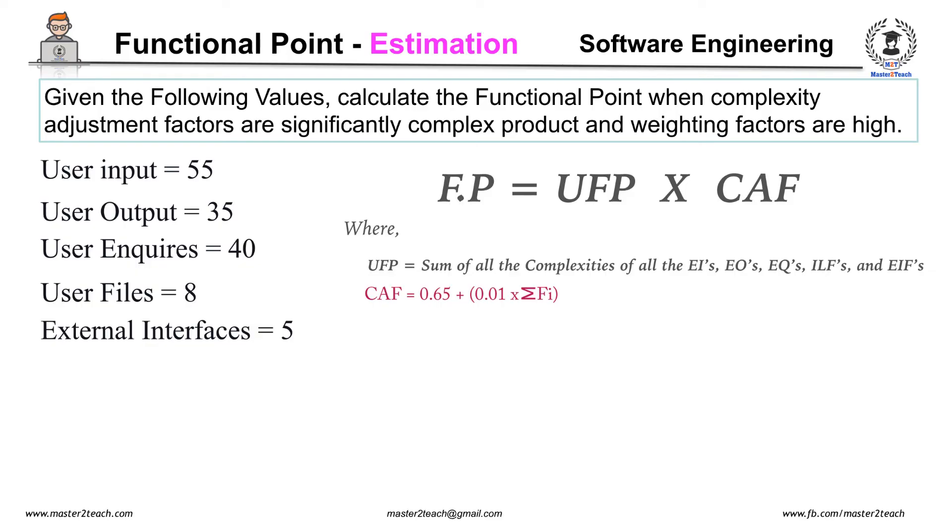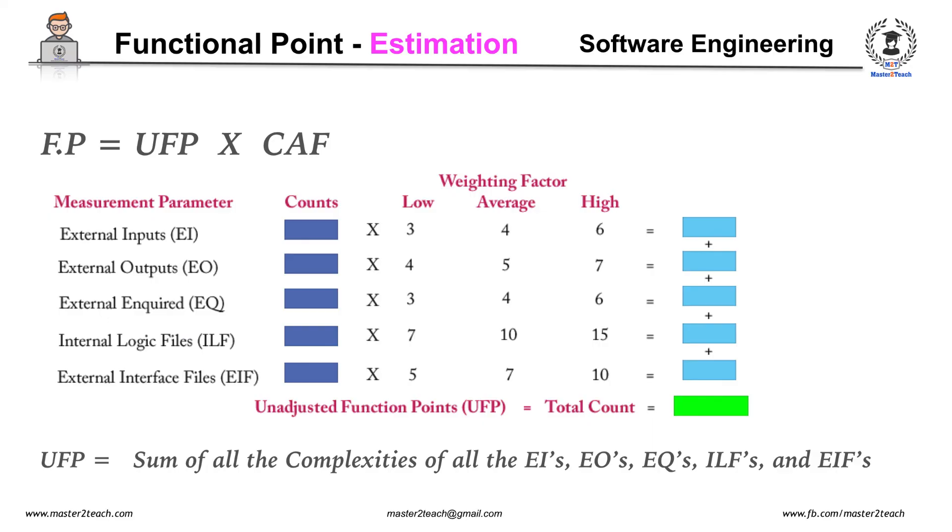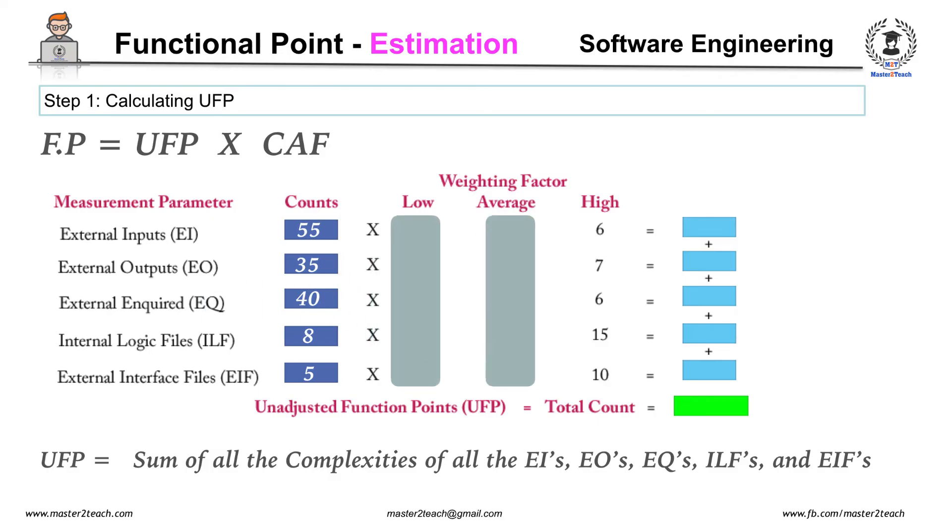Now let's calculate Unadjusted Functional Point. Filling table data, here we are required to calculate with the high weighting factor, so UFP equals 330 plus 245 plus 240 plus 120 plus 50, which equals 985.